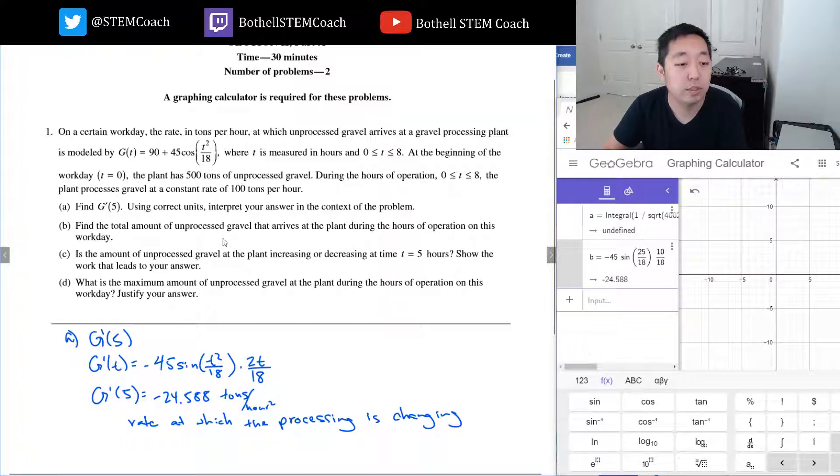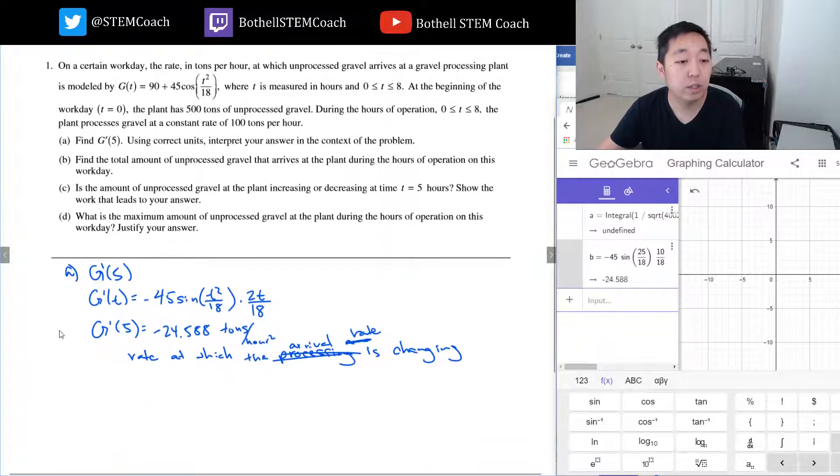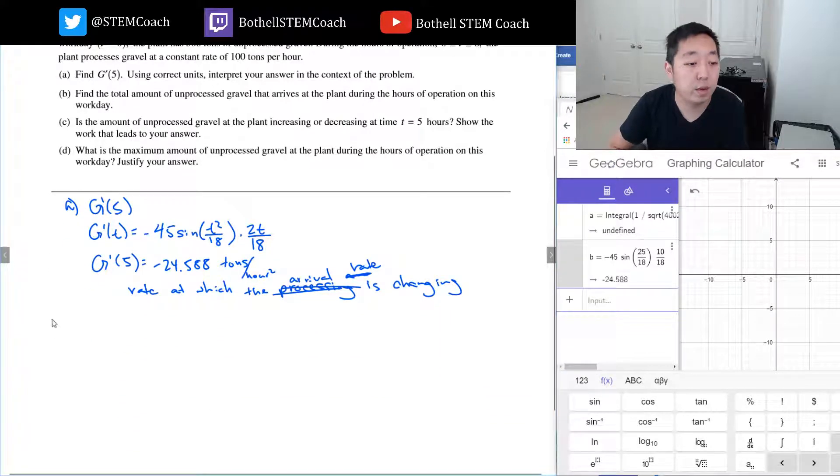Does that make sense? Find the total amount of unprocessed gravel that arrives at the plant during the hours. Oh, actually this is the rate at which the arrival amount, the arrival rate is changing.